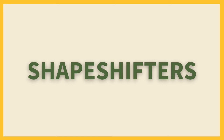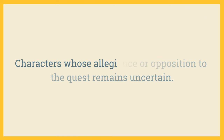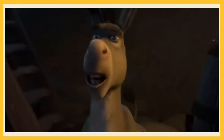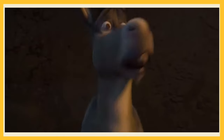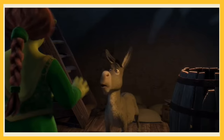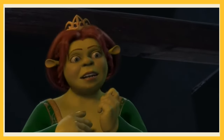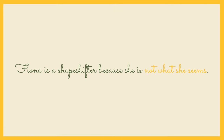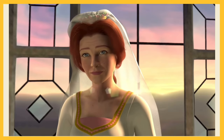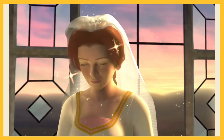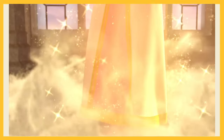Next, we have shapeshifters — characters whose allegiance or opposition to the quest remains uncertain. Fiona is a princess who is trapped in a dragon-guarded tower. She is beautiful, kind and intelligent, but she is also cursed to transform into an ogre at night. Fiona is a shapeshifter because she is not what she seems — she is both a princess and an ogre, and she is struggling to find her place in the world.